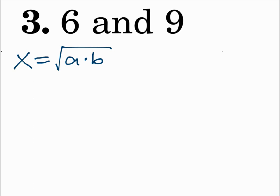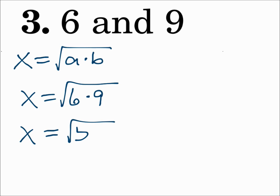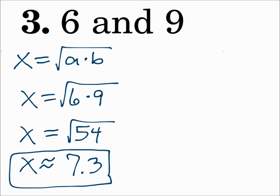Number 3: 6 and 9. Substitute into the formula. x equals the square root of 6 times 9, which is the square root of 54. Rounded to the nearest tenth, x is about 7.3. To find the geometric mean, multiply the numbers and take the square root.